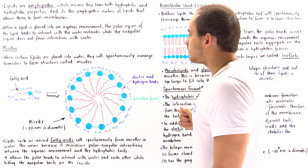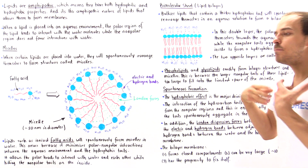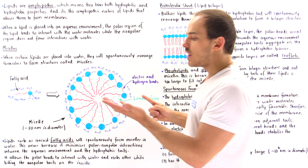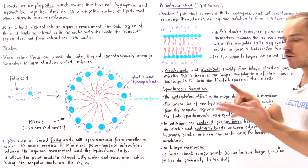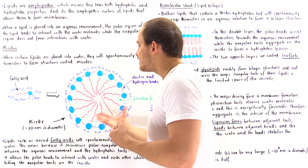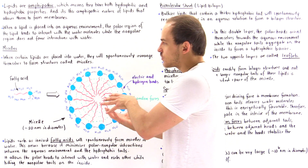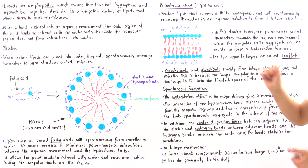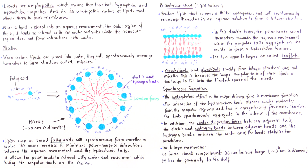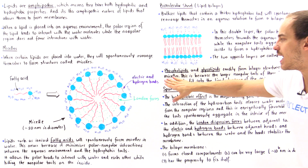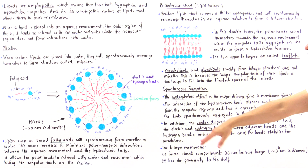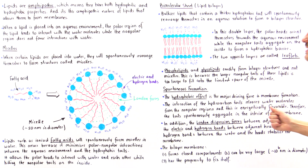What types of lipids actually form the lipid bilayer? The bulkier, larger lipids — things like glycolipids, phospholipids, or cholesterol molecules — are too large to fit snugly into the interior space of a micelle, so instead they form lipid bilayers. Phospholipids and glycolipids readily form bilayer structures and not micelles because their larger non-polar tails are too large to fit into the limited space of the micelle.